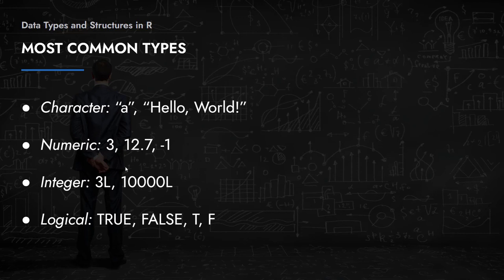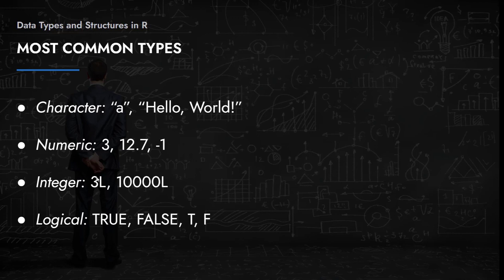Some examples of numerics include 3, 12.7, and -1. If you would like to refer specifically to an integer, R does come with a built-in integer data type. To let R know you are referring to an integer and not a numeric, you follow the number immediately with a capital L. For our work in data science and machine learning, you are not expected to know the nuanced difference between an integer and a numeric — just watch out for missing decimals.